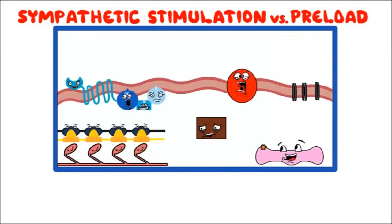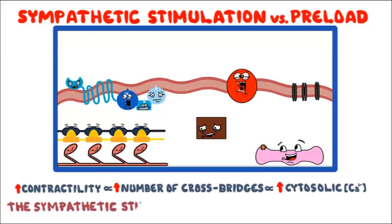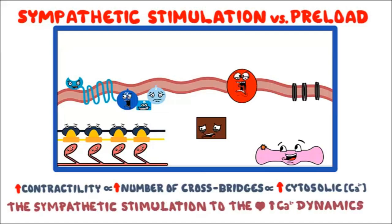Let's see how sympathetic stimulation versus increased preload change dp/dt and how they appear differently on a graph — this is heavily tested on USMLE Step 1. Contractility is directly proportional to the number of cross bridges cycling in the muscle, which is in turn directly proportional to intracellular calcium concentration. Increased intracellular calcium increases the number of cross bridges, which increases contractility. Sympathetic stimulation speeds up calcium dynamics, leading to increased contractility.